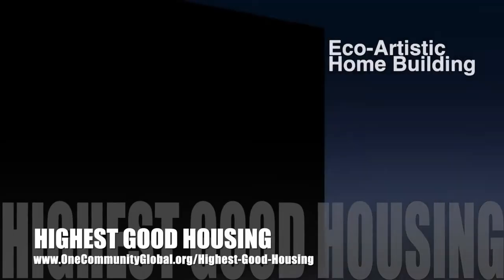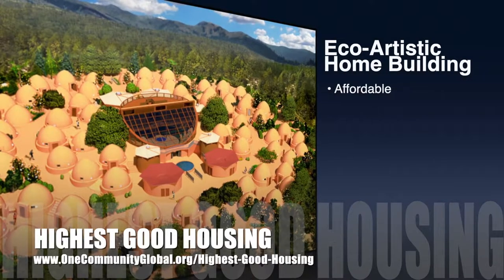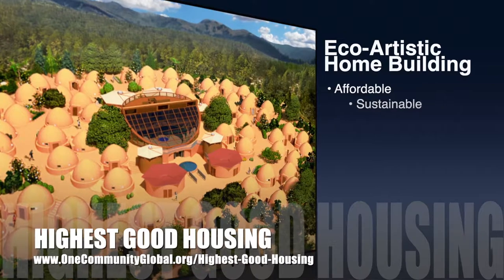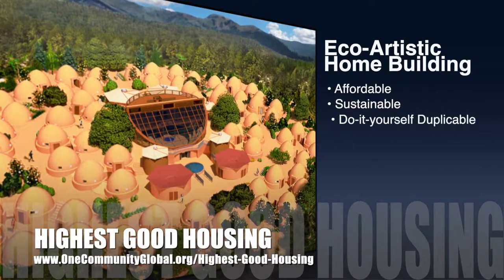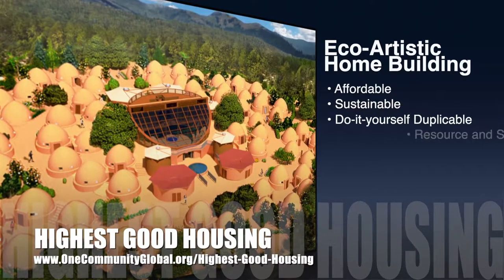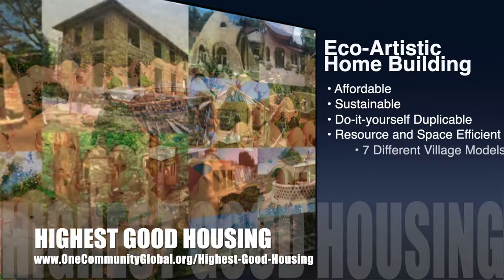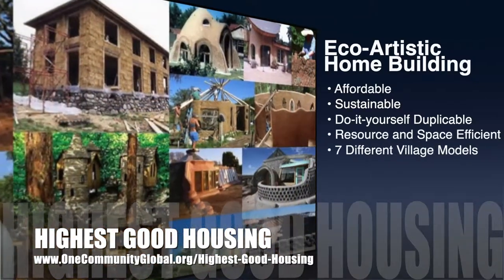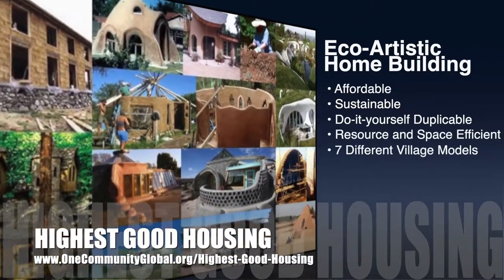The One Community approach to highest good housing is eco-artistic home building that is affordable, sustainable, do-it-yourself duplicable, resource and space efficient, and consists of seven different sustainably constructed village models.